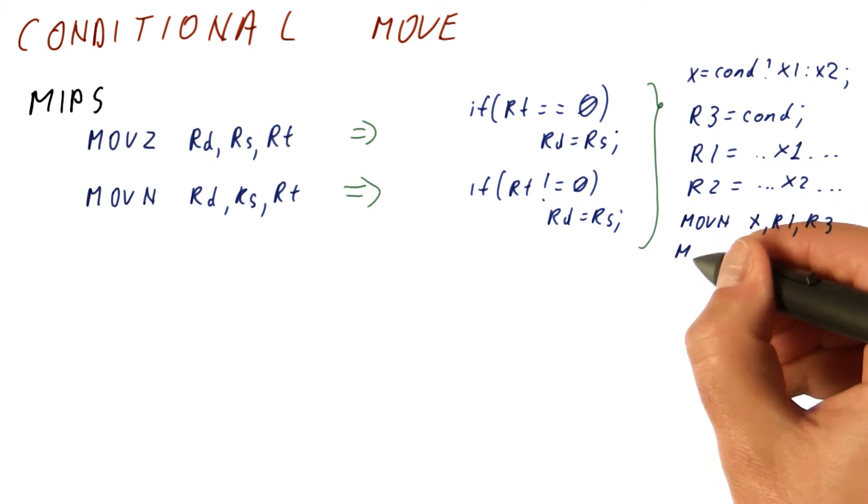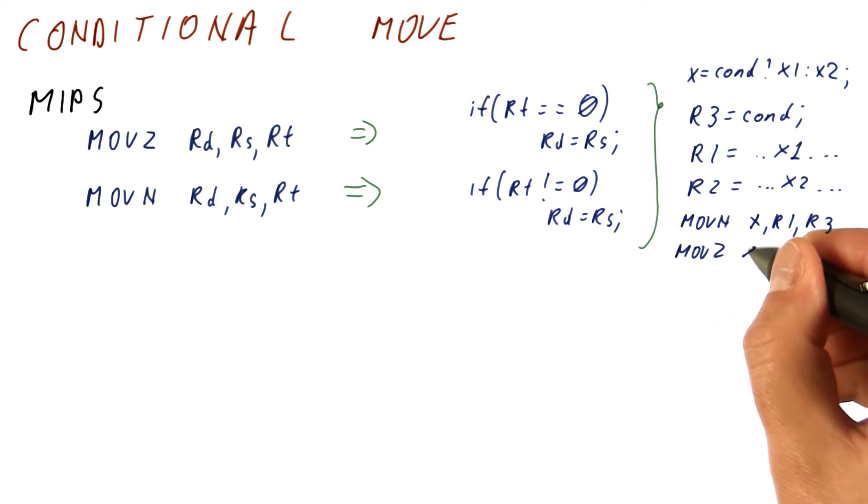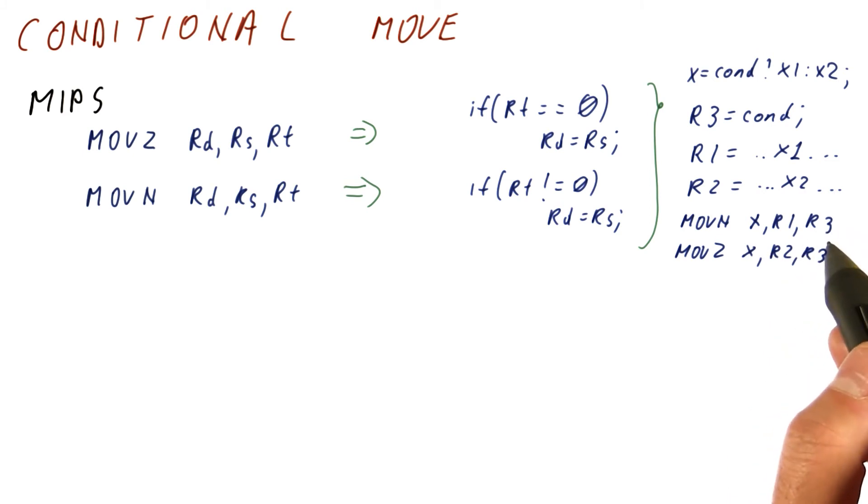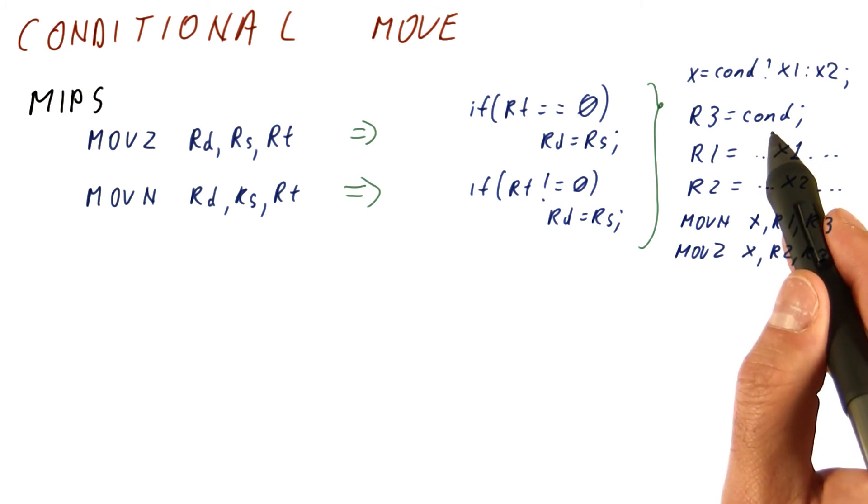MOVE Z, x, R2, R3. And this puts one of these two into x, depending on whether R3 was true or false, which means depending on the condition.